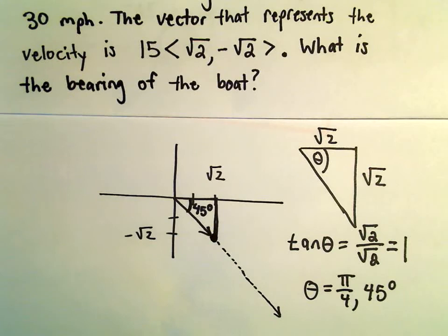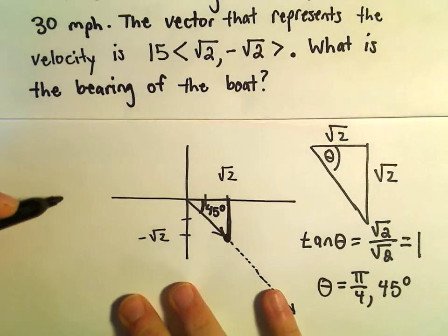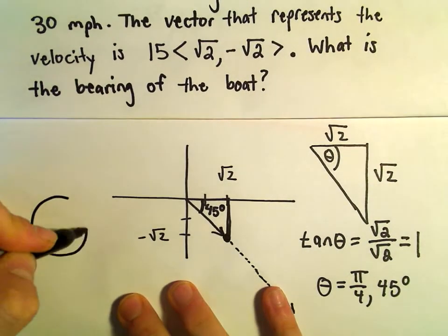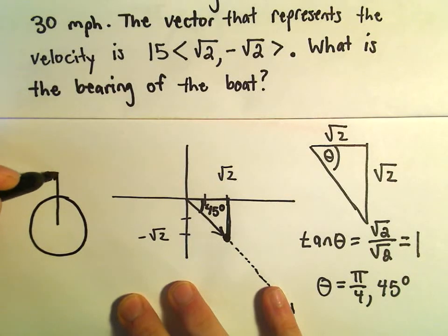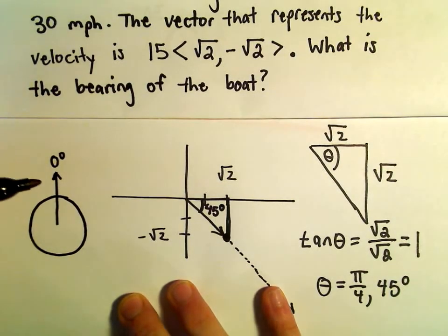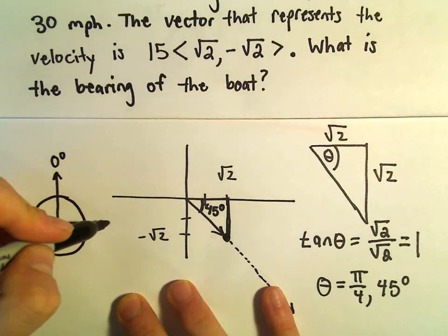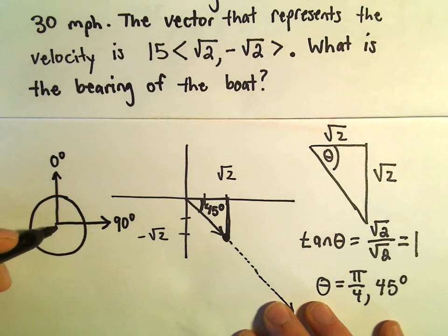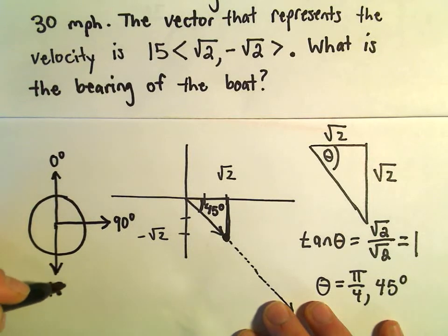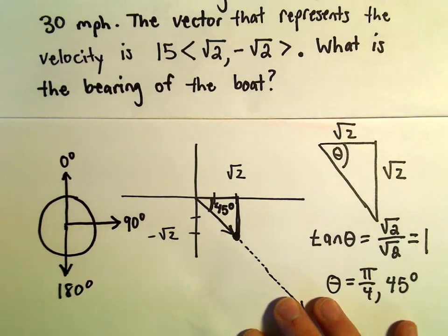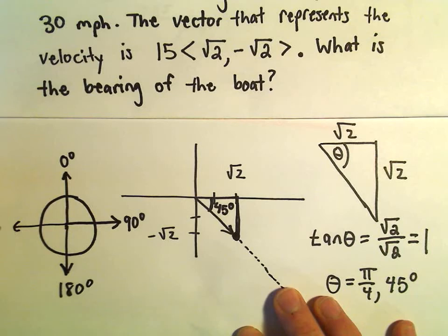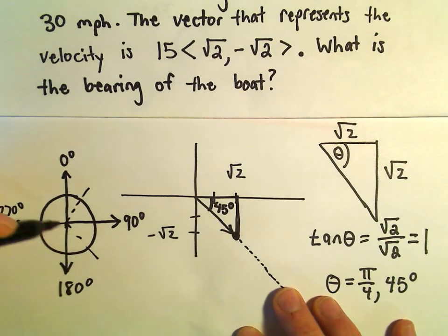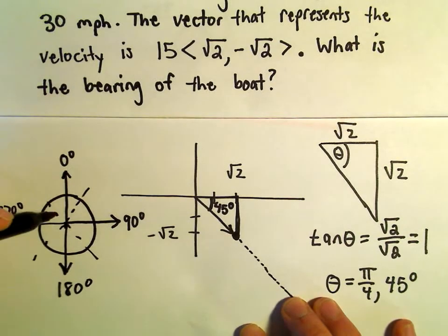Okay though, remember with bearings, the way that we describe bearings: if you're traveling due north, we would say you're at a bearing of 0 degrees. If you're traveling due east, we would say you're at a bearing of 90 degrees. If you're traveling due south, you're traveling at a bearing of 180 degrees. Due west, 270 degrees. And you can talk about any angle in between those numbers as well.